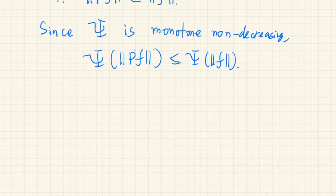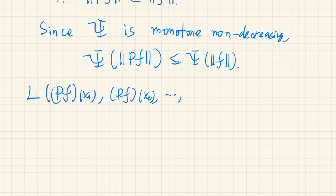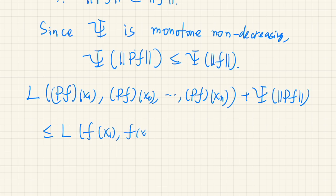Therefore, we have the following inequality. L(Pf(x1), Pf(x2), and so on, Pf(xn)) + psi(||Pf||) is less than or equal to L(f(x1), f(x2), and so on, f(xn)) plus psi(||f||).